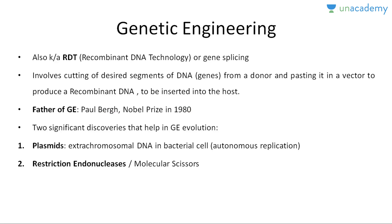Two significant discoveries helped in the evolution of genetic engineering: number one, plasmids, and number two, restriction endonucleases. Plasmids are a category of vector which is the extrachromosomal DNA in the bacterial cell. These plasmids are autonomously replicated — they replicate by themselves. This makes them the ideal DNA to transfer a gene of interest into the bacterial cell, making plasmids one of the most important discoveries which helped in genetic engineering evolution.